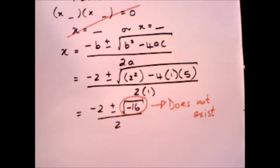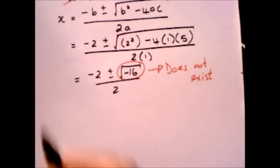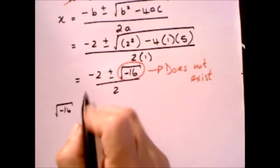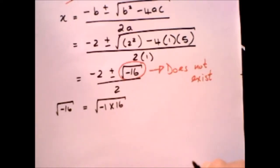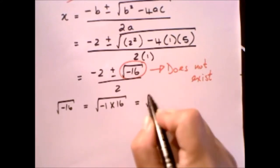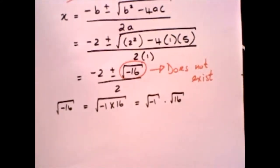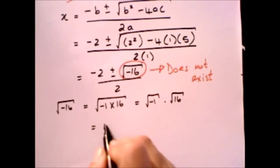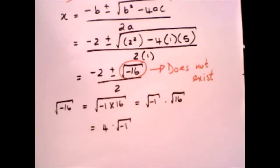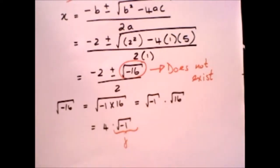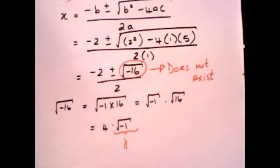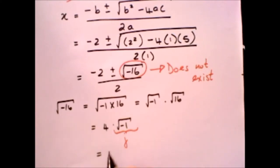Now imaginary numbers doesn't mean that they don't exist. It's just an unfortunate name that one of the mathematicians in the past gave it. If I look at the square root of minus 16, that can be broken up into minus 1 multiplied by 16, which is 4 times the square root of minus 1. This square root of minus 1 we are going to define as the value of j, which means that this value is going to be equal to 4j.